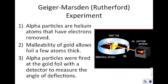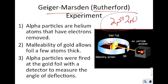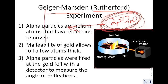Next we have what's called the Geiger-Marsden experiment — sometimes referred to as the Rutherford experiment. Rutherford was the one in charge of the lab; Geiger and Marsden were the ones who actually did the experiment. What they did is they took alpha particles, which are actually helium nuclei consisting of two protons and two neutrons together in a nucleus, and fired them at gold foil. The malleability of gold — the ability to be pounded into thin sheets — allowed them to produce gold that was only a few atoms thick, basically like a very thin tissue paper of gold.